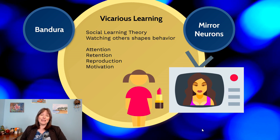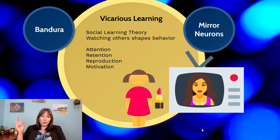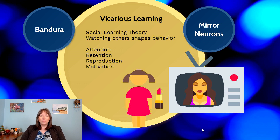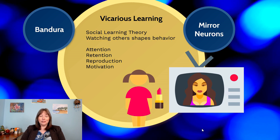We see this all the time. It tends to happen with parental figures, but also with role models in the media. So if we see someone on TV wearing a certain product — let's say a lipstick — and we like them, we attend to it, we can remember it, and we're motivated to feel similar to them, then we're going to try and wear the same product.